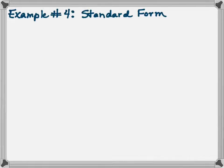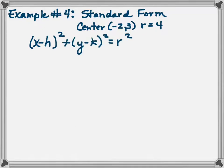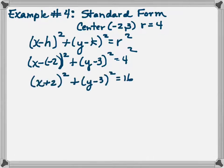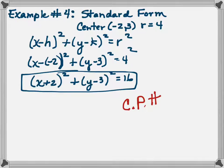Example number 4. The standard form, write the standard form of a circle whose center is at negative 2, 3 and whose radius is 4. So let's remind ourselves of what the formula is. So it would be x minus minus 2 squared plus y minus 3 squared equals 4 squared. Or x plus 2 squared plus y minus 3 squared equals 16.